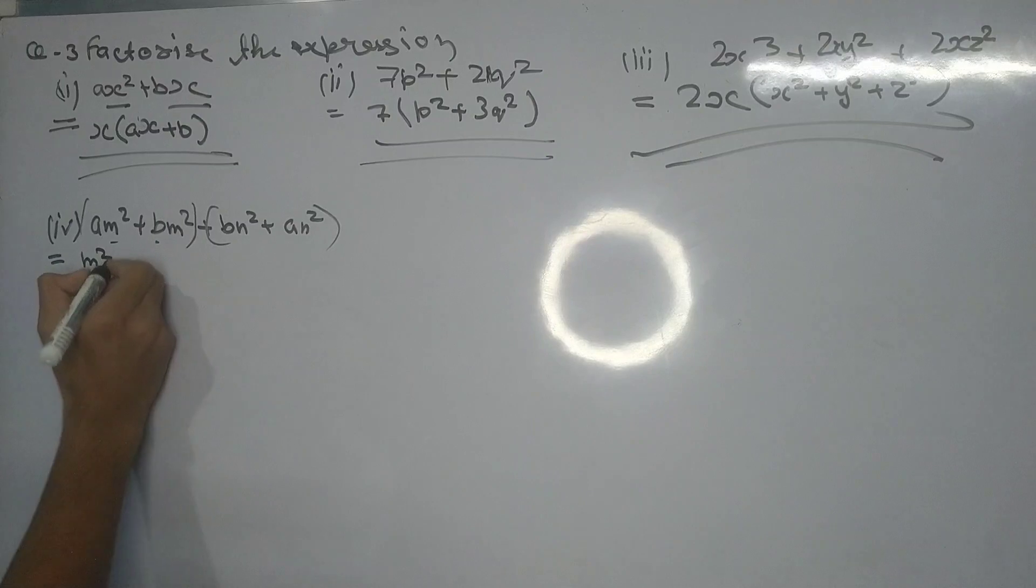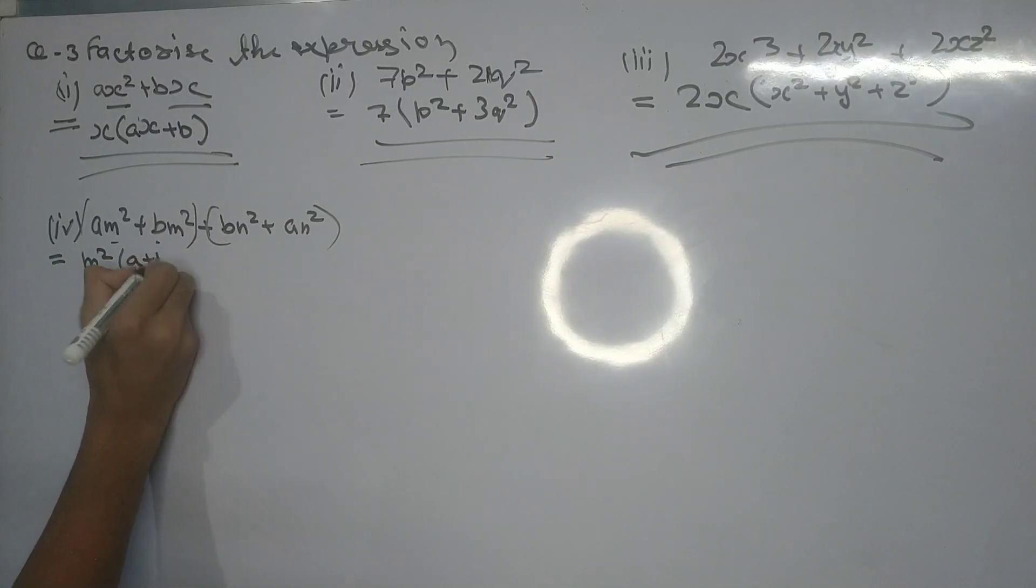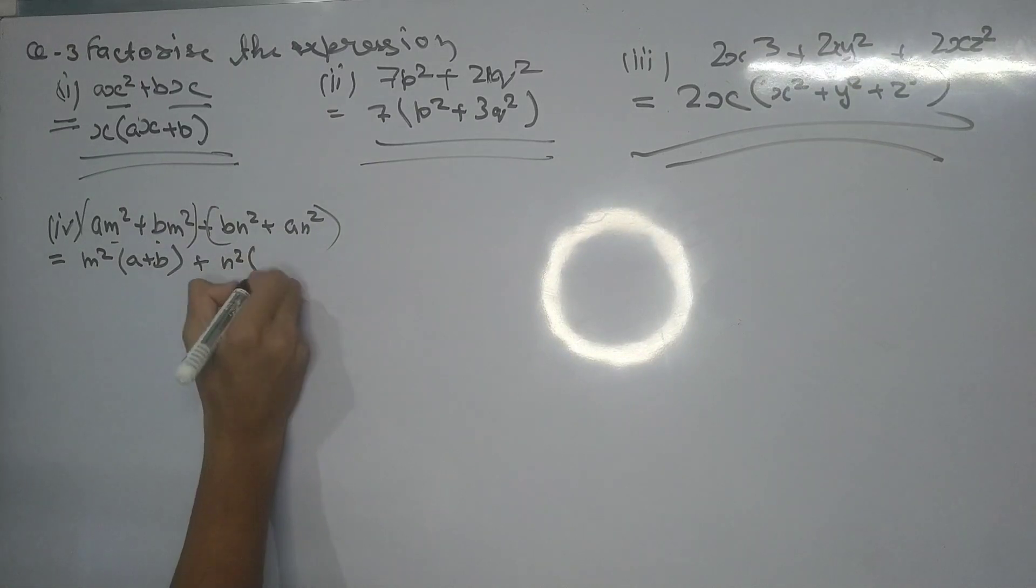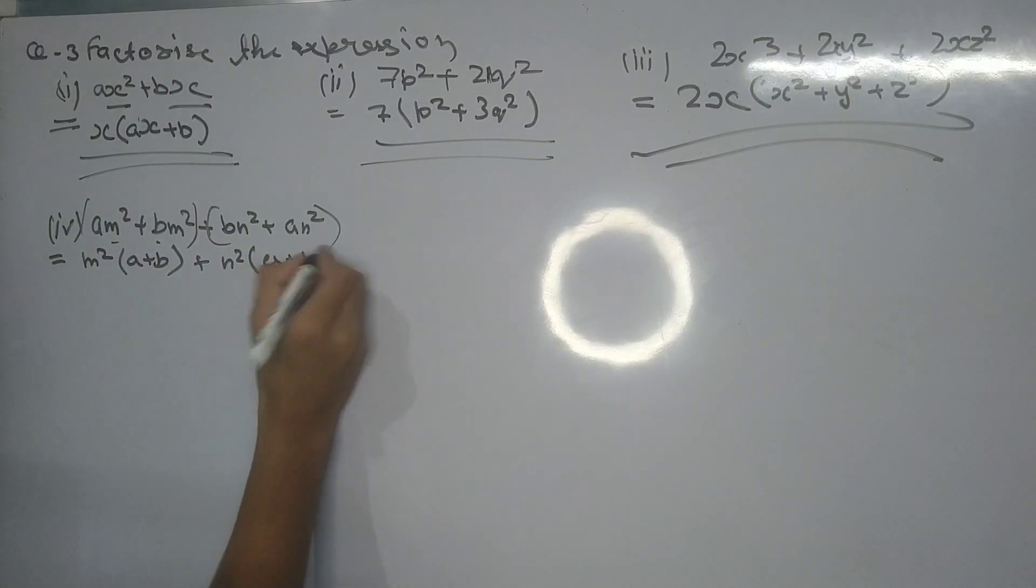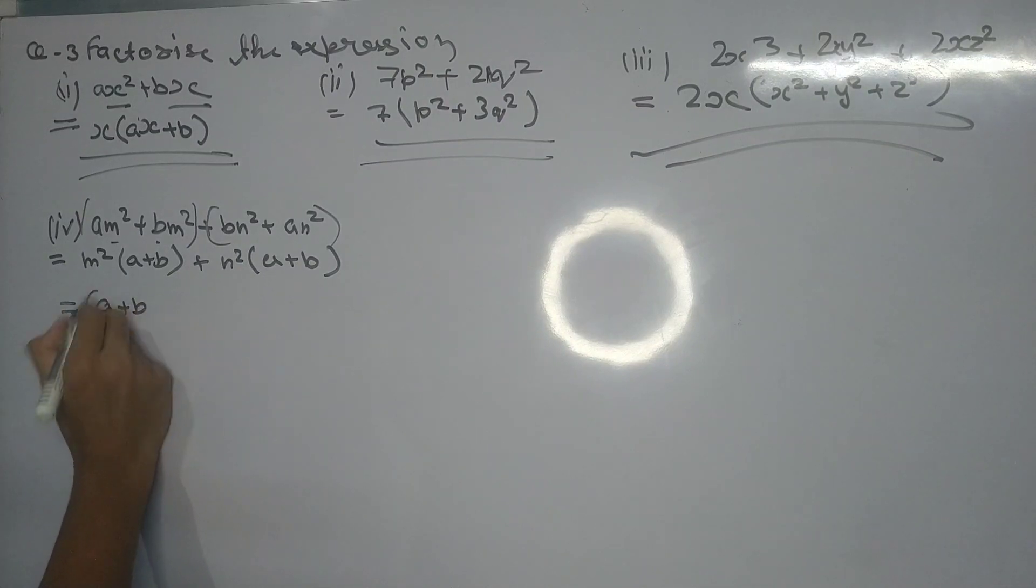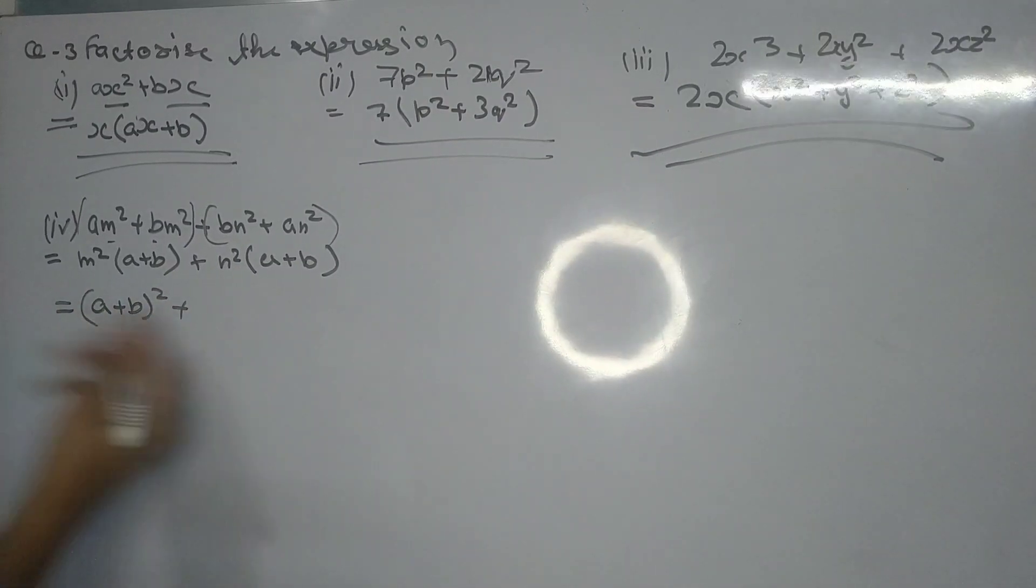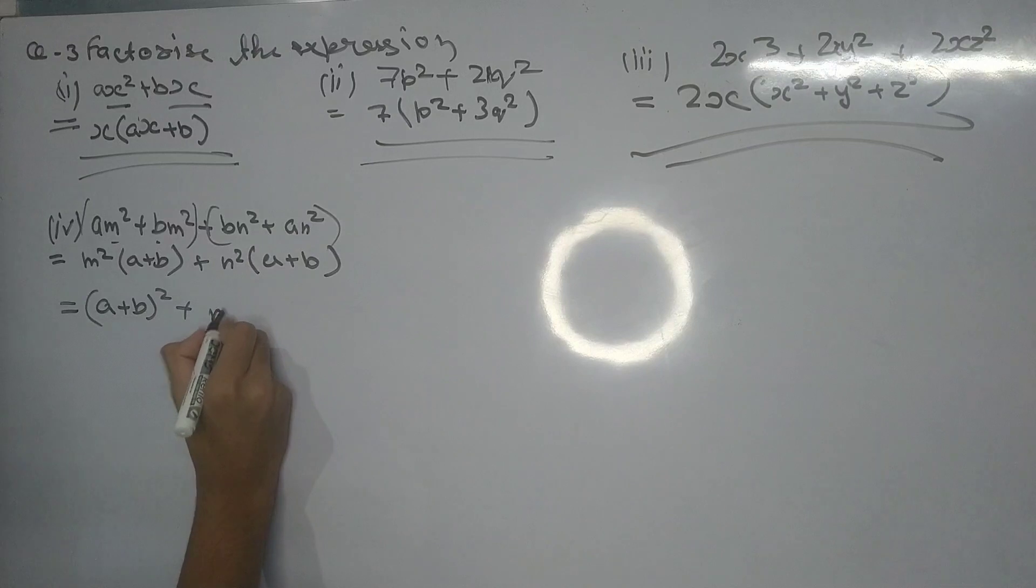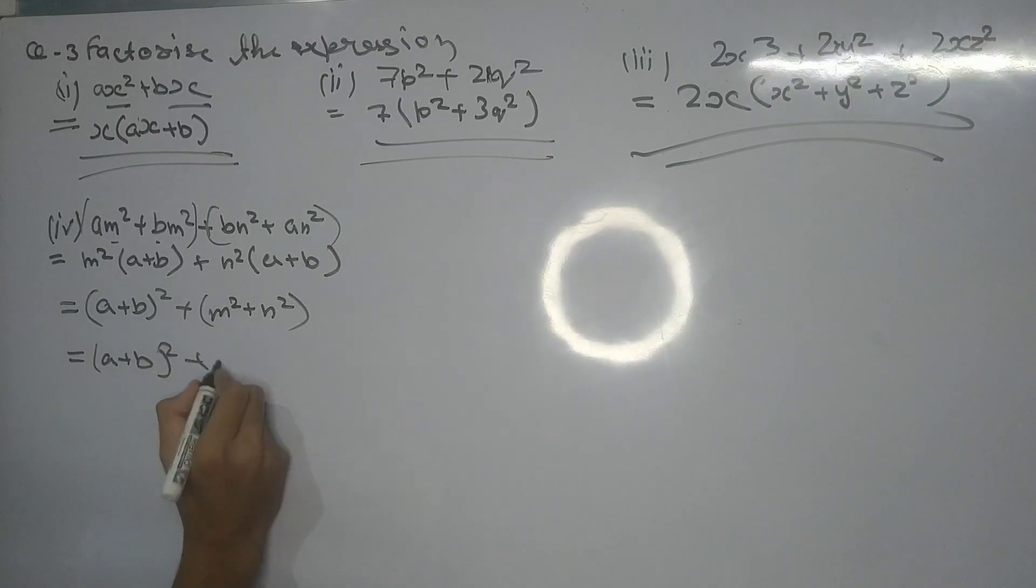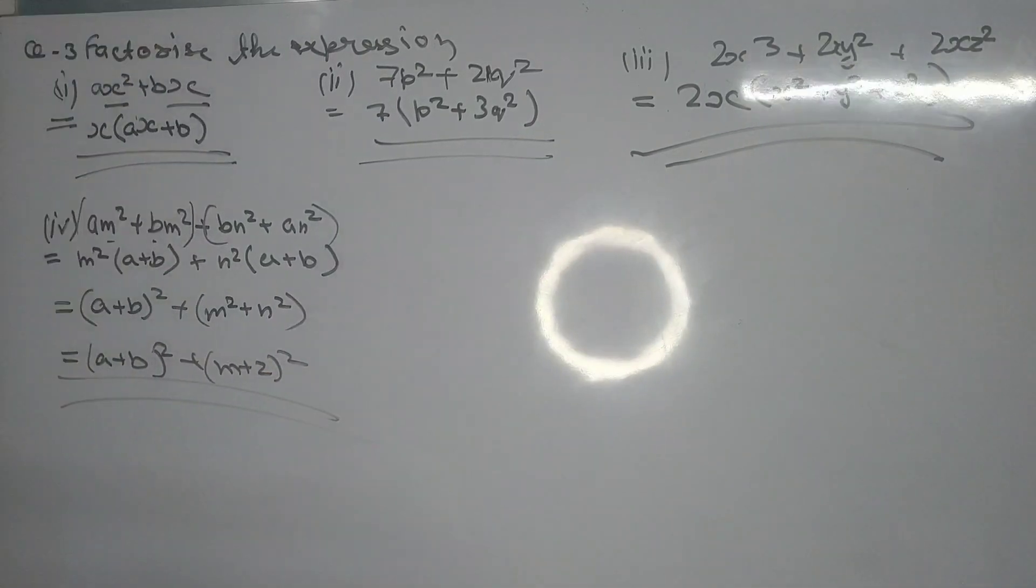Then we factor out (a plus b) to get (a plus b) times (m squared plus n squared). That's all for this part.